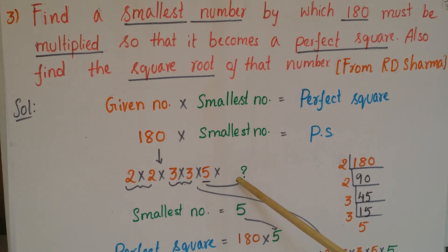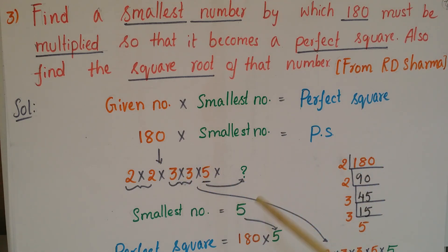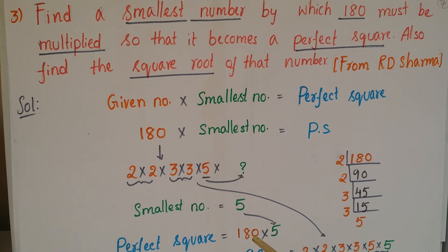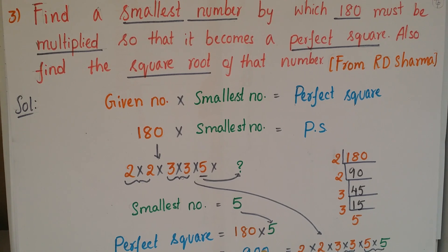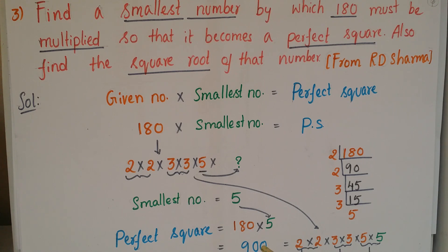If you multiply the smallest number with the given number we get the perfect square. The smallest number is 5, so the perfect square = 180 × 5 = 900.